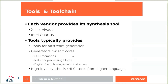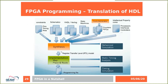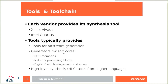Each vendor provides its own synthesis tool. The synthesis tool generates a bitstream and also provides algorithms and tools to run the mapping phase and place and route. It also contains a special IP core generator for generation of soft cores — you can use a predefined library of components, for example generating FIFO memories, network processing blocks, or configuring the digital clock management. In these days, high level synthesis tools from higher languages, very typically C or C++, are also standard.